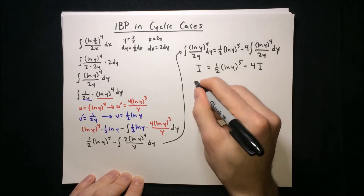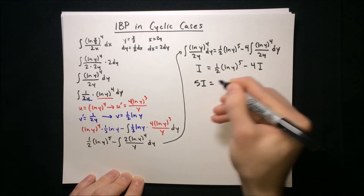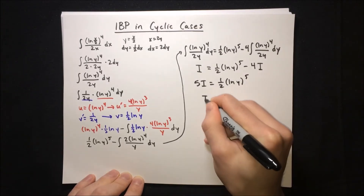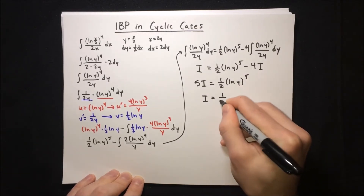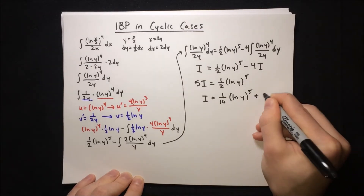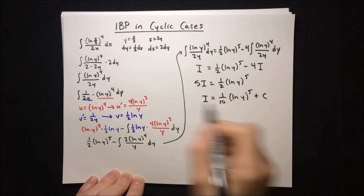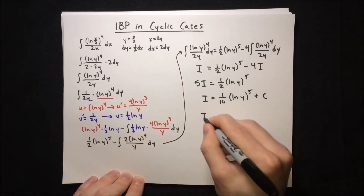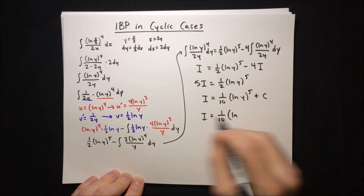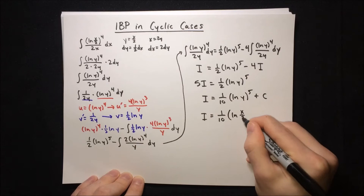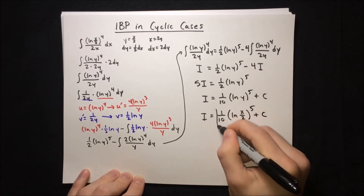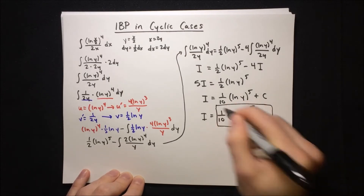We add 4i to both sides to get 5i equals half ln(y^5), so i equals 1/10 ln(y^5) plus C. Then we back-substitute y equals x over 2, giving us i equals 1/10 times ln(x/2) to the 5th plus C. That is our final answer for this integral.